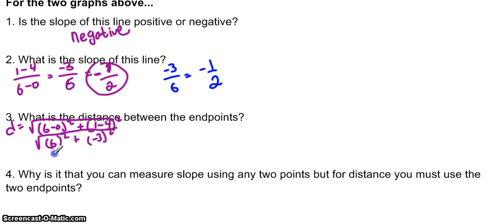6 squared is 36. Negative 3 squared is 9. Remember, negative times a negative is a positive. 36 plus 9 is 45.